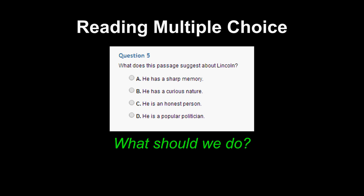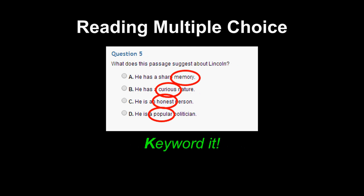Let's look at this question: what does this passage suggest about Lincoln? This is another case of keywording. I can circle or underline the most important words in A through D. The first is about memory, the second about curiosity, the third about honesty, and the fourth about popularity. Rather than reading a full phrase like 'he has a sharp memory,' I focus on the most important distinguishing word, circle or underline it, and can more easily answer the question.